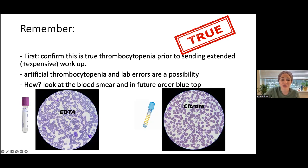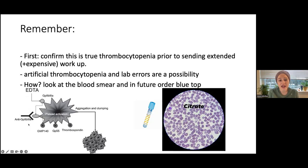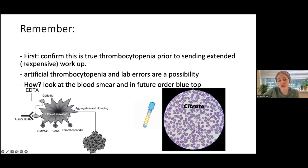The blue tube uses citrate as an anticoagulant, which does not cause this problem. The body in some patients can produce antibodies — anti-GP2B3A — against the GP2B3A proteins on the platelets, which changes the shape of the platelets and causes them to clump together. For these patients, remember that you need to send a blue tube.